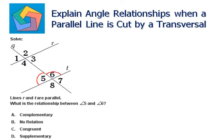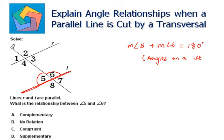Both are lying on a straight line. If we add angle 5 and angle 6, the measure of angle 5 plus the measure of angle 6 will come out to be 180 degrees, because angles on a straight line form a linear pair.